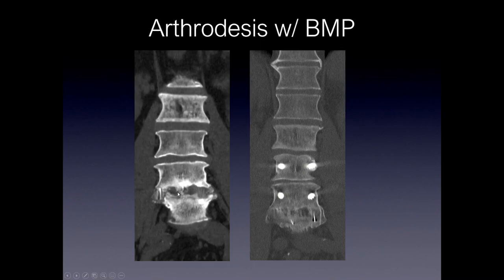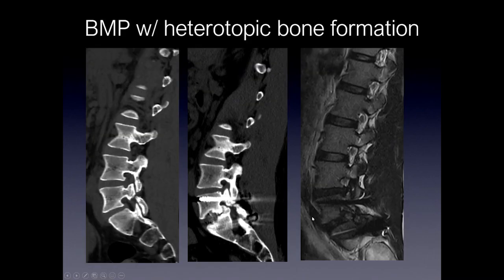Here's a patient who underwent two surgeries. The patient initially had a lumbar interbody fusion and bone morphogenetic protein was placed inside the disc space. The patient subsequently underwent a fusion, and along with the bone morphogenetic protein, you can see clear, robust fusion with bony bridging across this disc space.